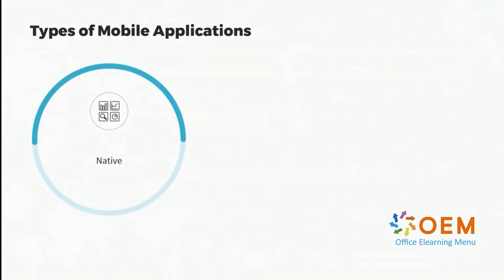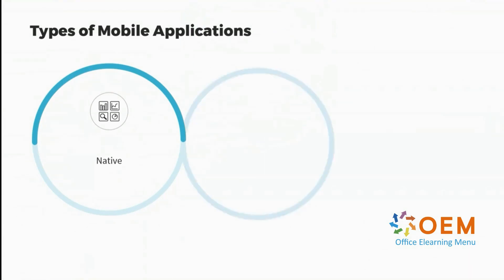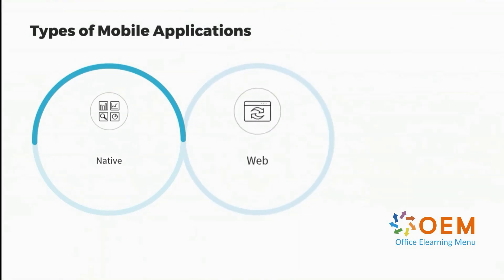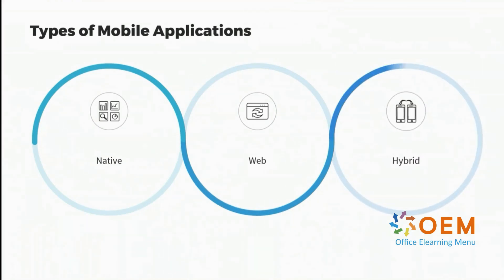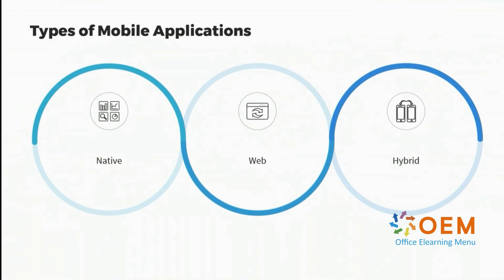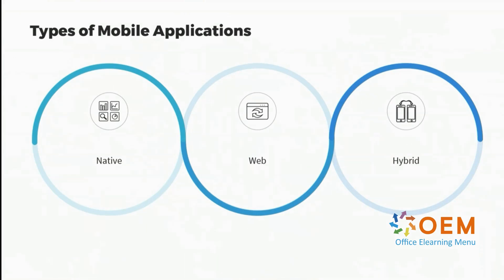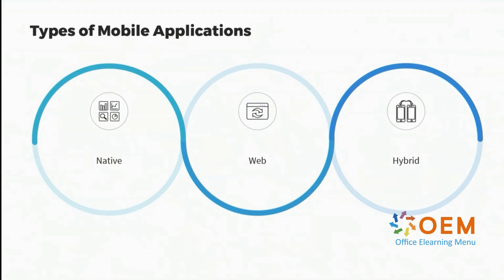Native applications are built for a specific particular platform — this can be an iOS app or an Android app. We also have web apps, which only require a browser to run. Then we have hybrid apps, which combine elements of both a native app and a web app, offering cross-platform functionality, meaning they can work on iOS and Android at the same time.